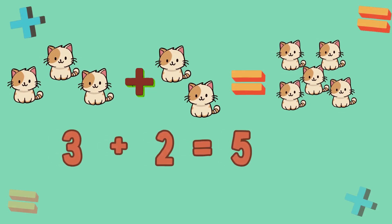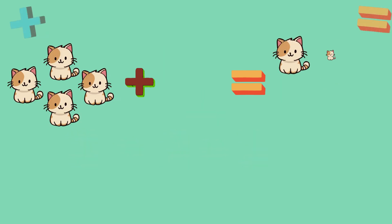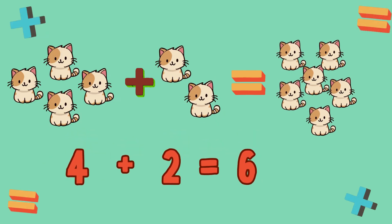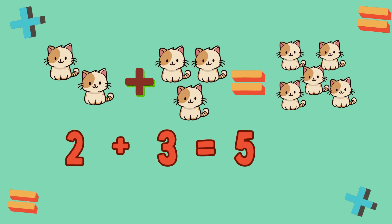How many cats are here in total? 3 cats plus 2 cats — there are 5 cats altogether. 3 plus 2 is equal to 5. How many cats are here in total? 4 cats plus 2 cats — there are 6 cats altogether. 4 plus 2 is equal to 6. How many cats are here in total? 2 cats plus 3 cats — there are 5 cats altogether. 2 plus 3 is equal to 5.